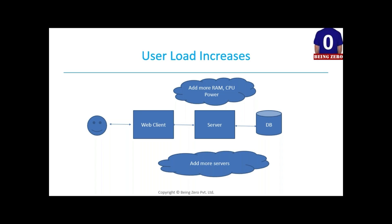The other option is horizontal scaling - adding more servers. Instead of one server you have two, three, or four servers. You need to decide how many servers based on your network bandwidth - are you storing messages or videos? How many users are you expecting? Every new request spawns a new thread, so you have limited memory and need to decide how many threads you can spawn. We'll cover these details in the system design concepts section.